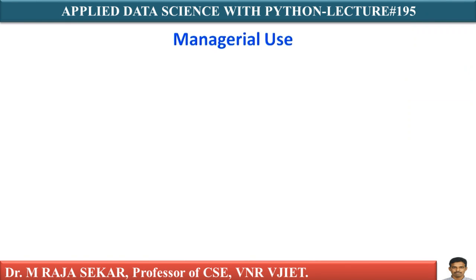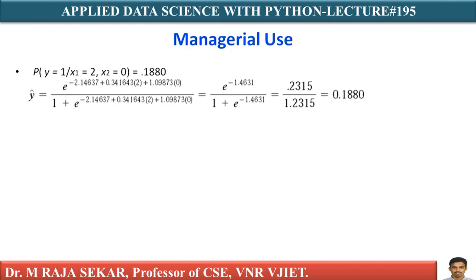Now let me discuss about managerial use of Logistic Regression. I am continuing from lecture number 194. Y is the dependent variable. Y equal to 1 means customer using coupon. Y equal to 0 means not using coupon. P means probability — the probability that a customer is using coupon. This is the dependent variable.